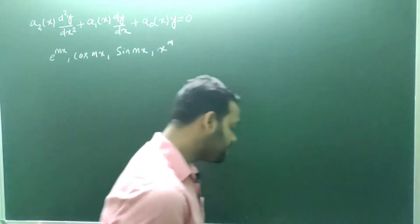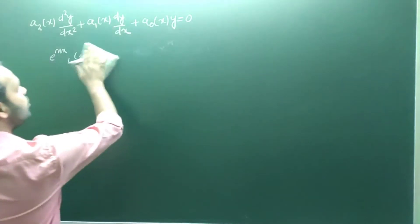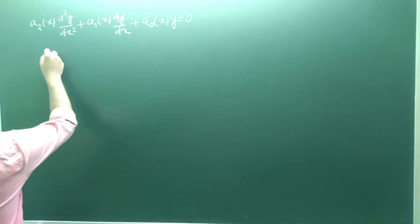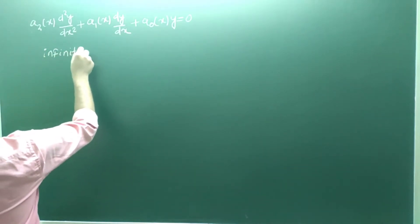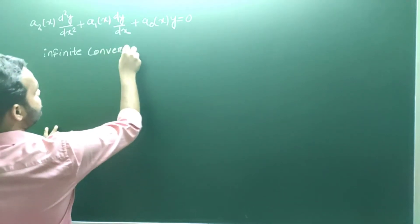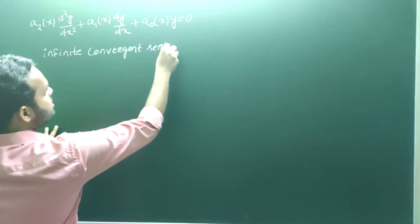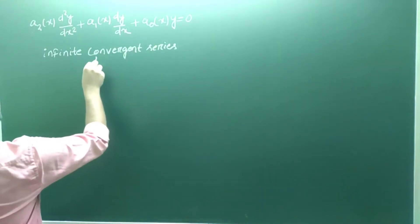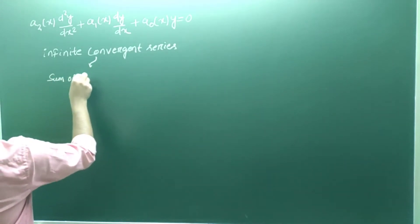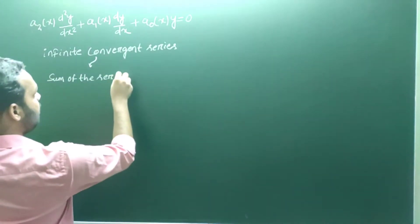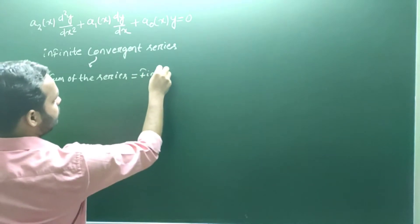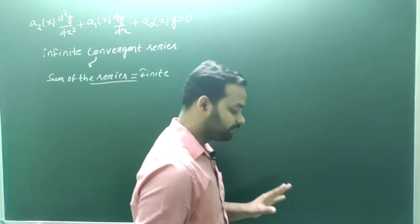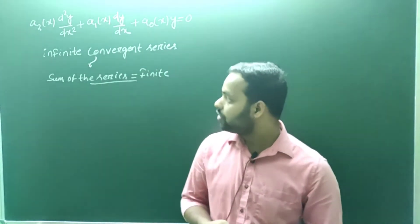The solution of this kind of differential equation will be in the form of an infinite convergent series of functions. 'Infinite' means the number of terms in the solution is infinite. 'Convergent' means the sum of this infinite series will be a finite value — that is what we call a convergent series.